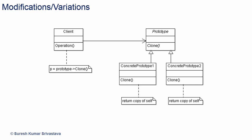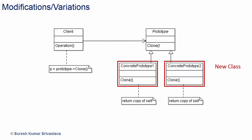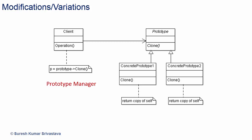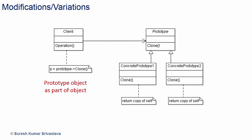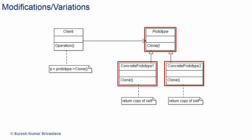Let's see some modifications and variations. We hide concrete class information from the client, making it easy to add new classes without much modification. We can have a prototype manager to manage all prototype objects for easy access. We can add or remove objects at runtime by adding or removing prototype objects accessible to the client. We can have prototype objects with different values, reducing the need for multiple classes for small value changes. We can also clone an object in its most appropriate state and initialize changed values after cloning. An object can also require a prototype object, so we can have a prototype object as part of another object.